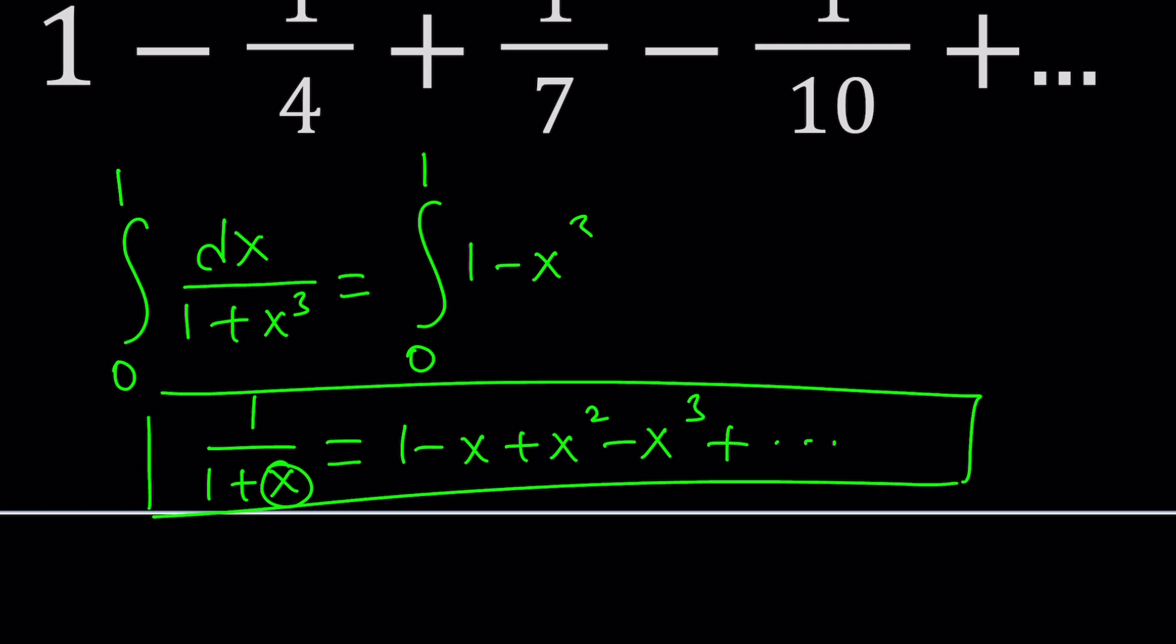So now we can replace 1 over 1 plus x³ with the following. 1 minus x³ plus x³ squared, which is x⁶, x³ cubed, which is x⁹, so on and so forth. So this gives us, in the exponent, multiples of 3. In other words, numbers that are 0 mod 3. In other words, multiples of 3. Cool.